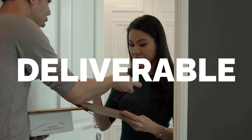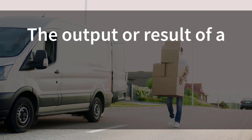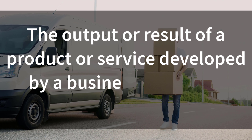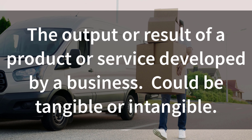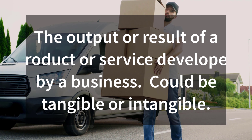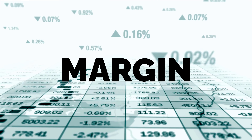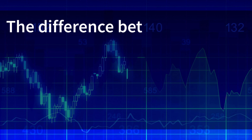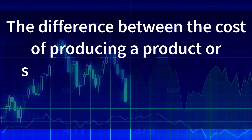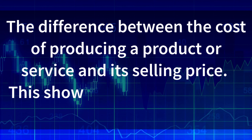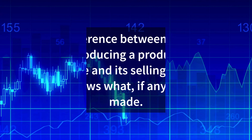Deliverable: The output or result of a product or service developed by a business. Could be tangible or intangible. Margin: The difference between the cost of producing a product or service and its selling price. This shows what, if any, profit is made.